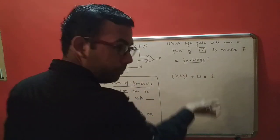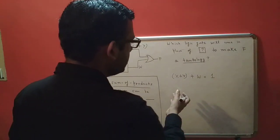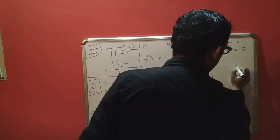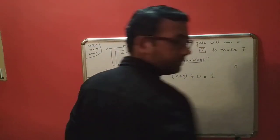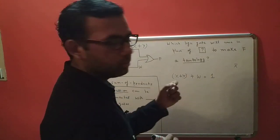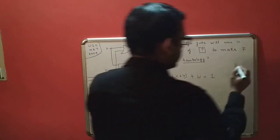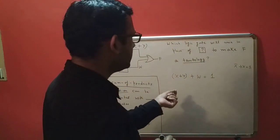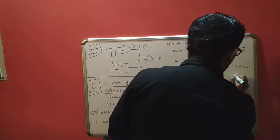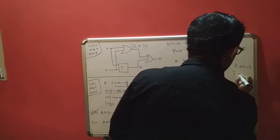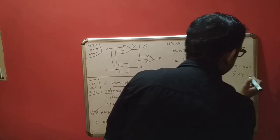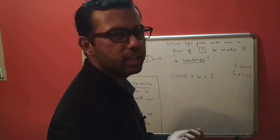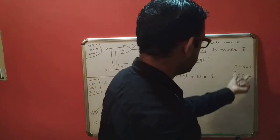If somehow I could get x complement and y complement, then using the laws of Boolean algebra I could get a one. If I OR x with x complement I get one; similarly if I OR y with y complement I get one. This is the complementation rule in Boolean algebra.